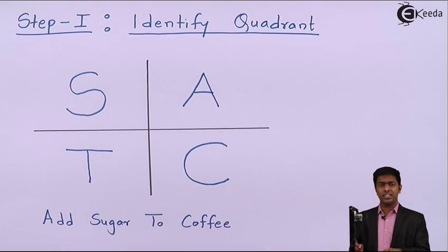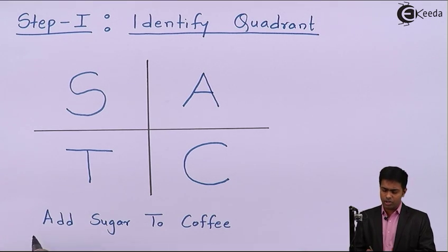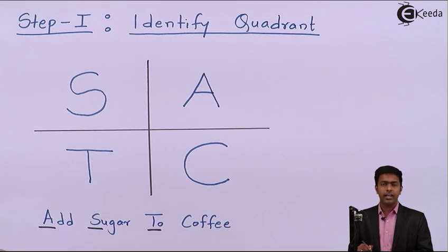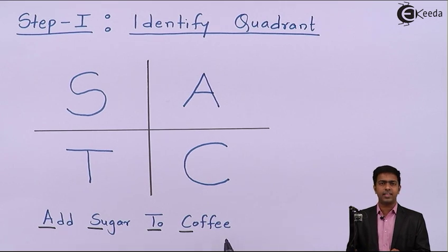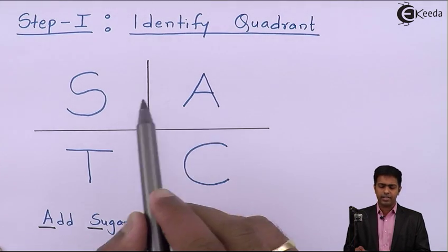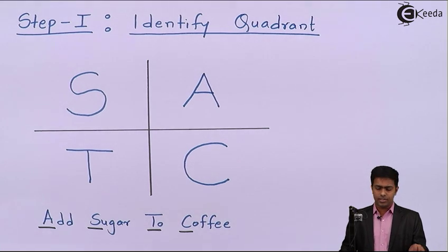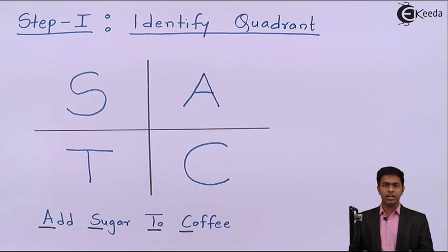If you want to remember this ASTC system, I will give you a mnemonic: 'Add Sugar To Coffee.' Remember the first letter of each word — A in Add, S in Sugar, T in To, and C in Coffee. This ASTC gives the formula for identifying positive trigonometric functions in each quadrant.